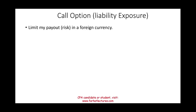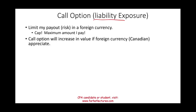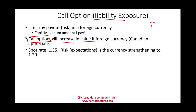The purpose of the call option is to limit your payout — same purpose as the forward or futures contract — because your risk with a liability is: I want to cap how much I pay. You put a ceiling on the maximum amount paid for that 1 million Canadian dollars. If you buy a call option, you lock your price, and if the currency goes up, the call option itself increases in value to offset the higher cost of your liability.